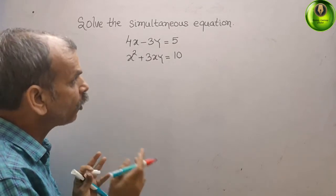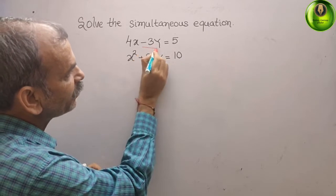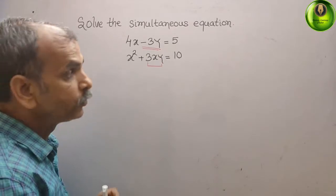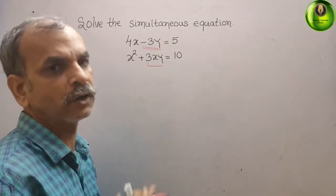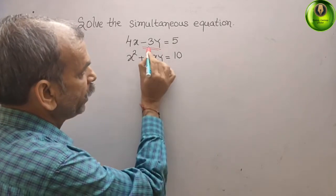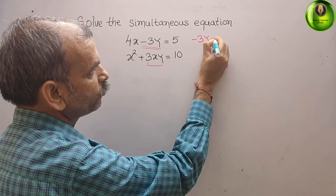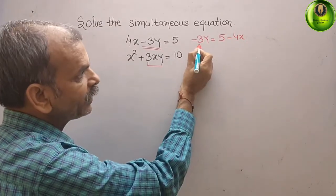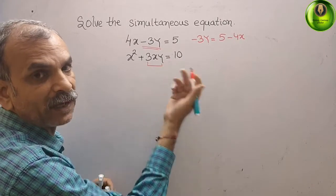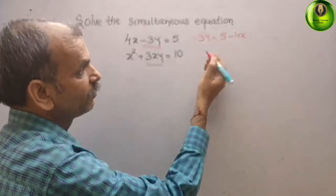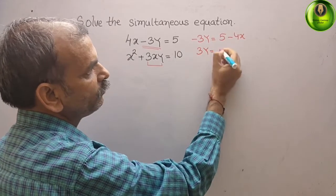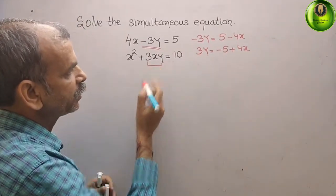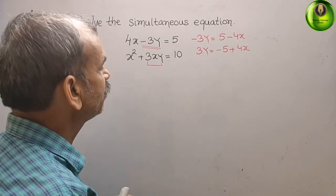First, check what is given: the first equation has minus 3y and the second has 3y. From the first equation, we will find out what 3y is. Bringing minus 3y over, 3y is equal to 5 minus 4x, which we can write as 3y equals minus 5 plus 4x.